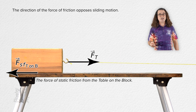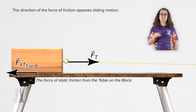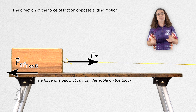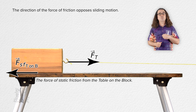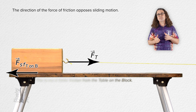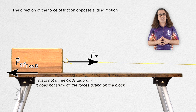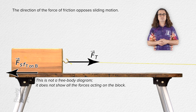And before the block slides to the right, there is still a force of tension pulling the block to the right. However, the block is not yet moving. In other words, in the absence of a force of static friction, the block would slide to the right. Therefore, the force of static friction from the table on the block is to the left.